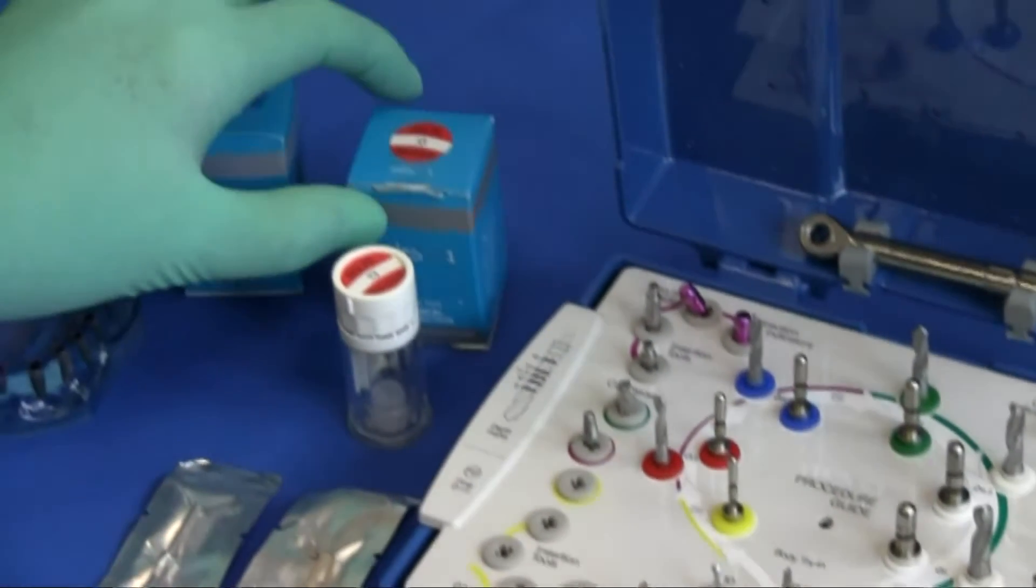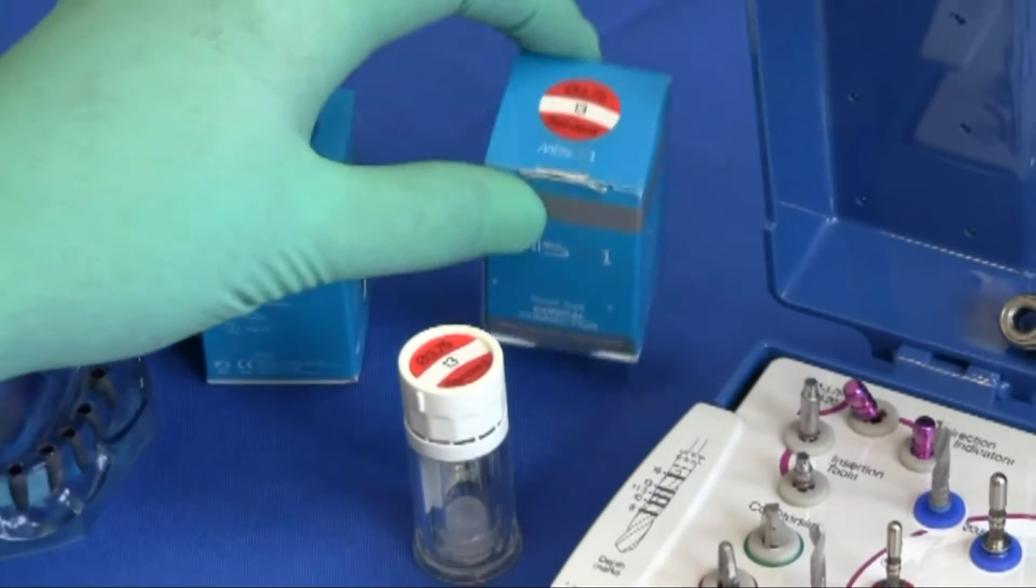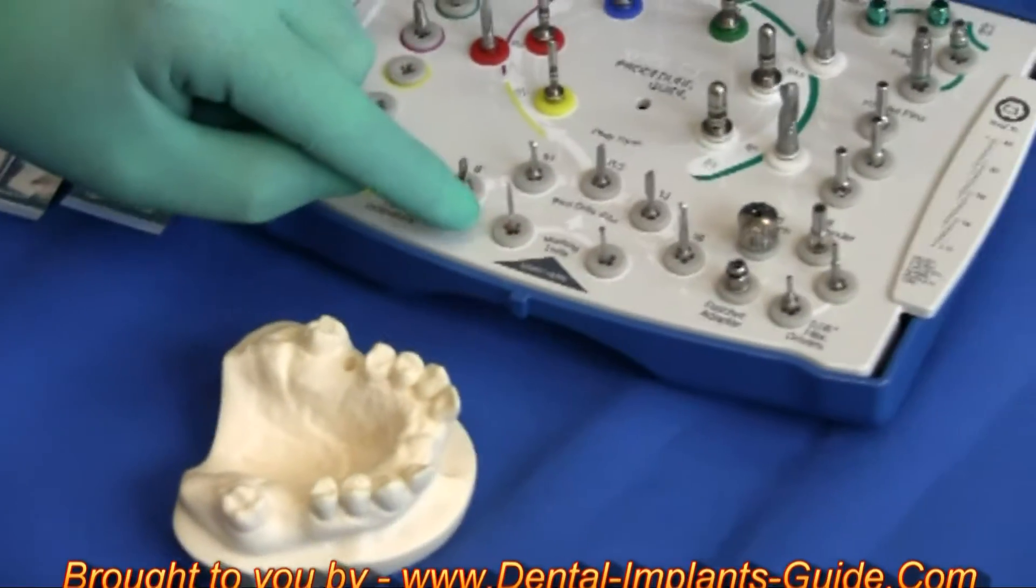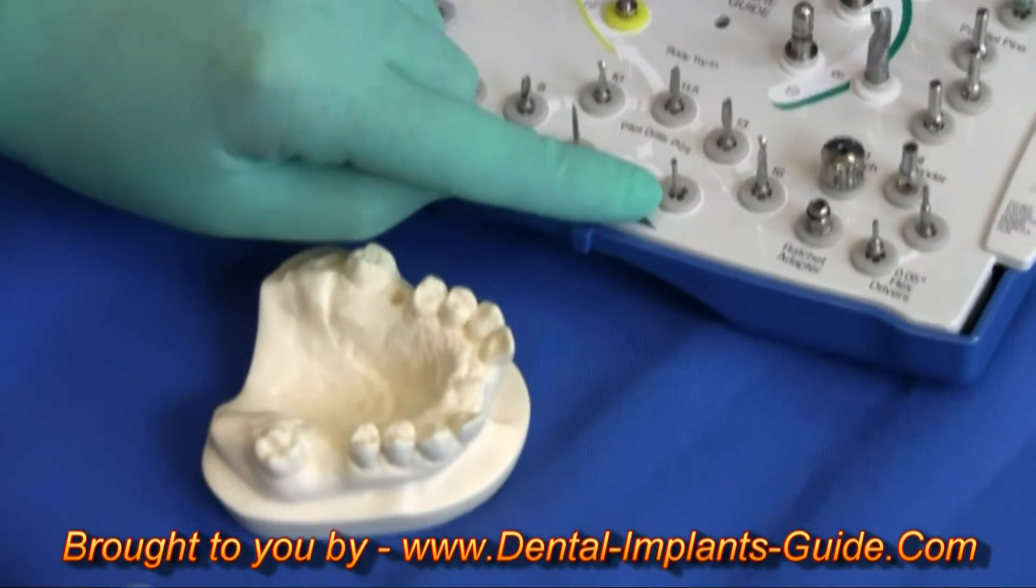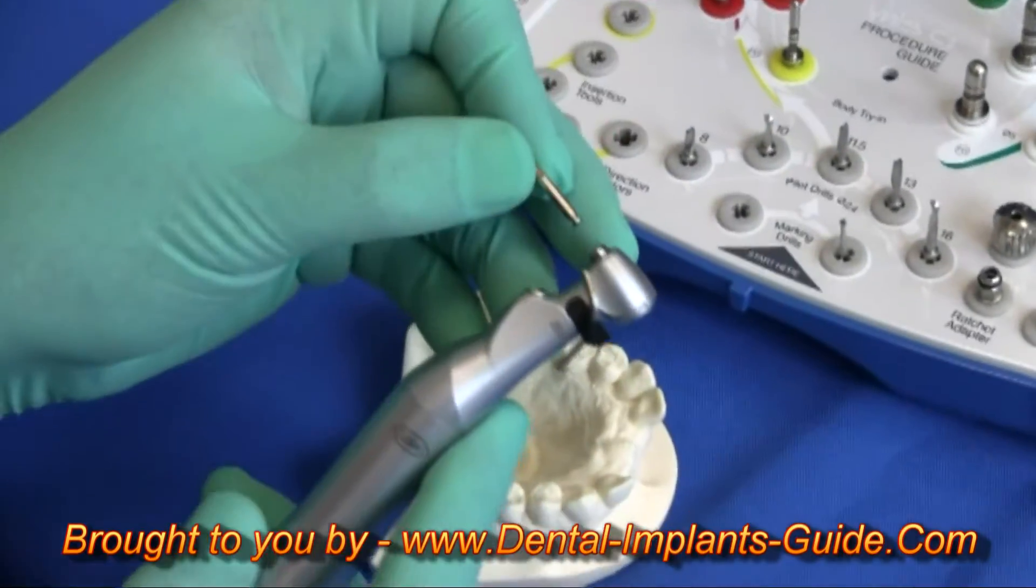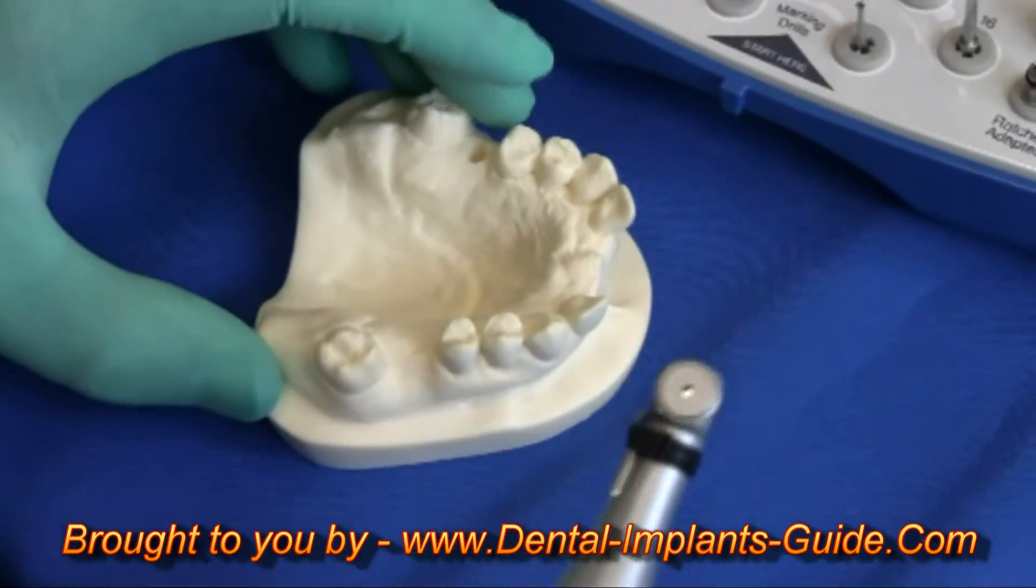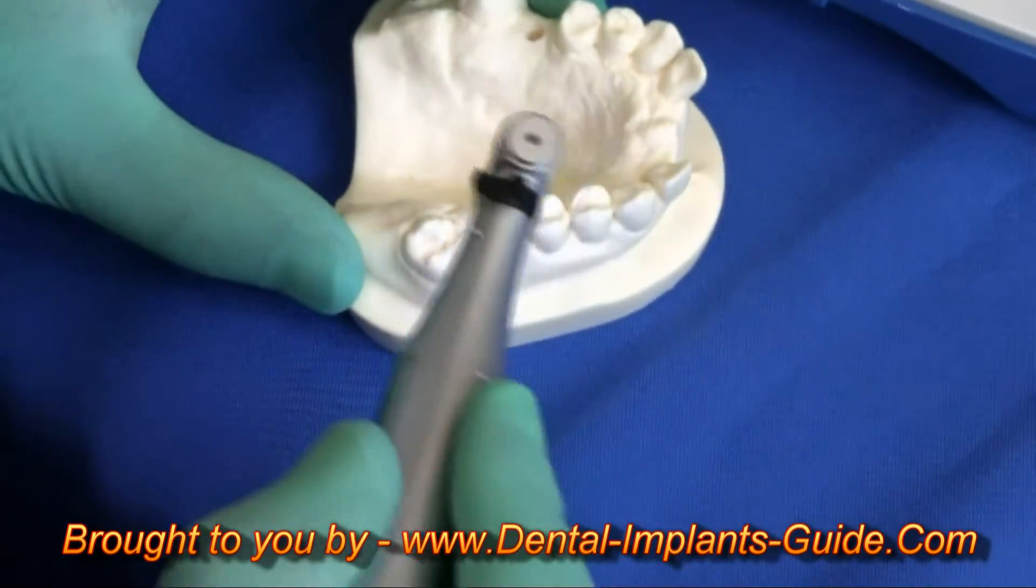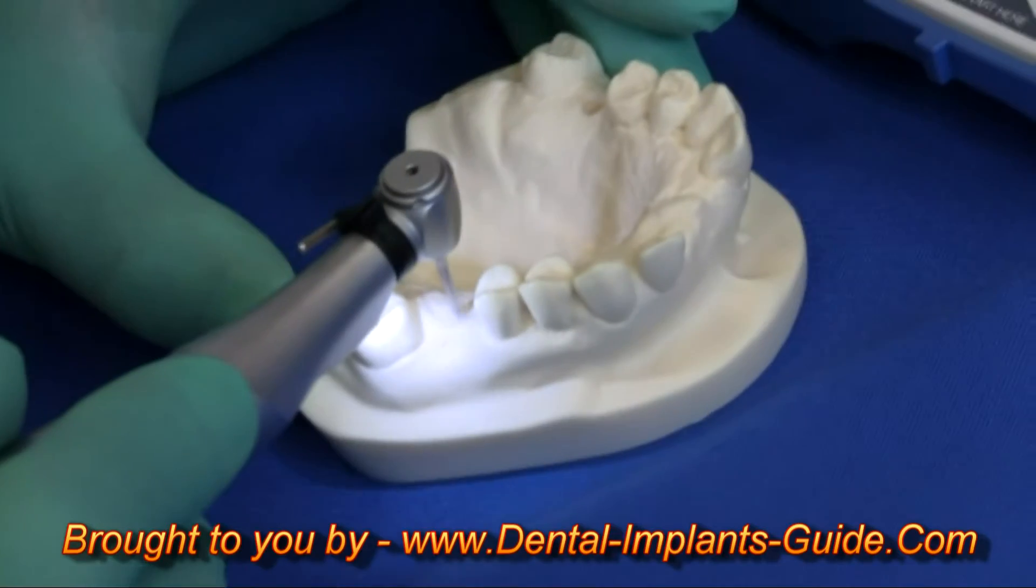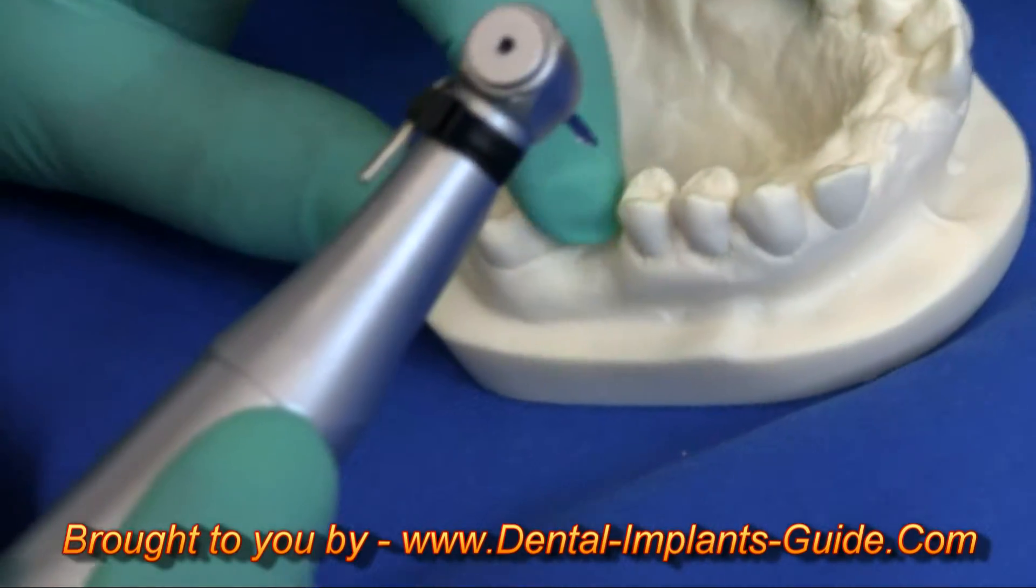I'm going to place a 3.75mm by 13mm length C1 implant. First, I would want to mark the site using either our Spade Marking Drill or regular Marking Drill. I'm going to use the Spade Marking Drill, just enough to mark the place on the bone.